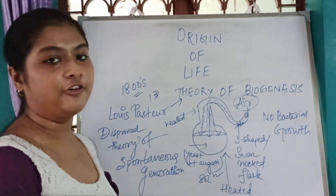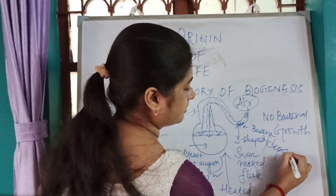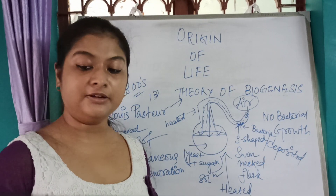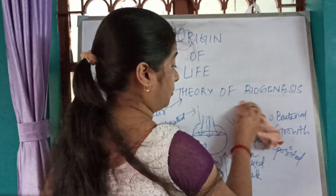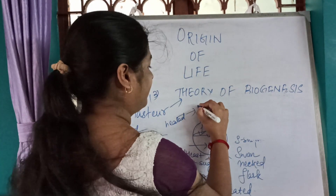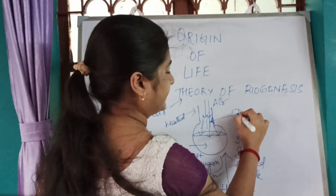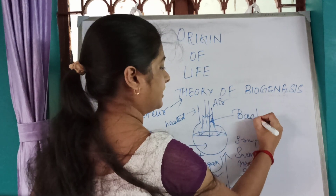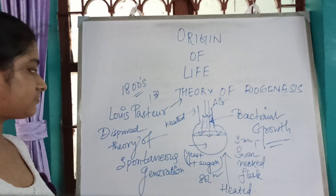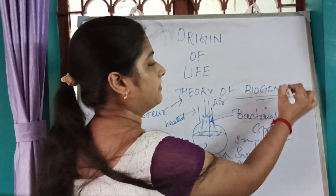Sterile air means air which is free of microorganisms. The bacteria were deposited on the S-shaped neck and sterile air passed through, hence there was no bacterial growth. But then he broke the neck of the flask, and the outside air came into direct contact with the contents of the flask — and he saw bacterial growth. This proved that Louis Pasteur disproved the theory of spontaneous generation and proved the theory of biogenesis.